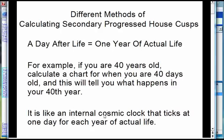Secondary progressions are one of the most common methods used by modern astrologers to forecast the future. They're based on this idea that a day after birth equals one year of actual life. For example, suppose you're 40 years old — you're going to calculate a chart for 40 days after birth, and this tells you what happens in your 40th year.